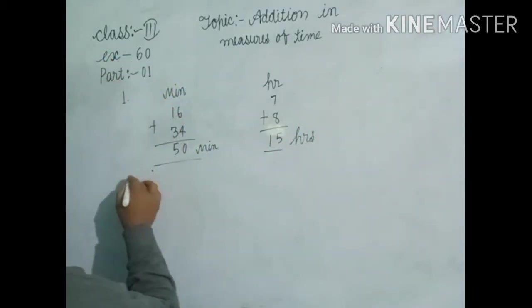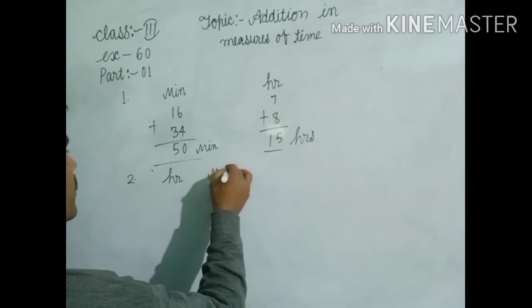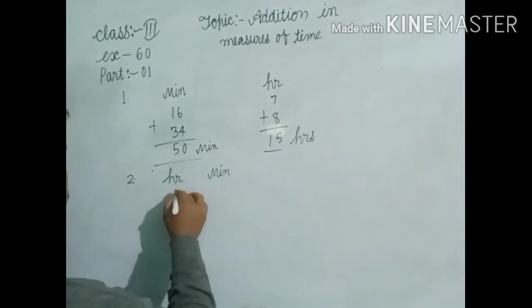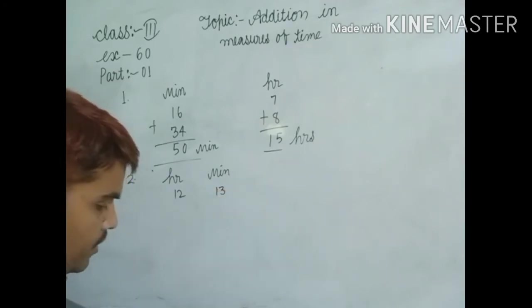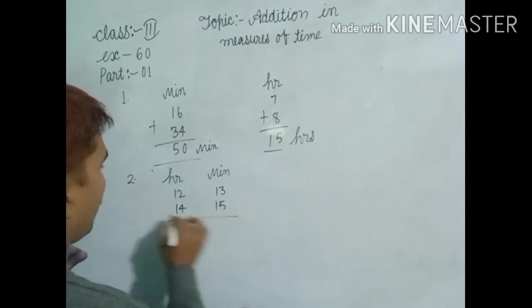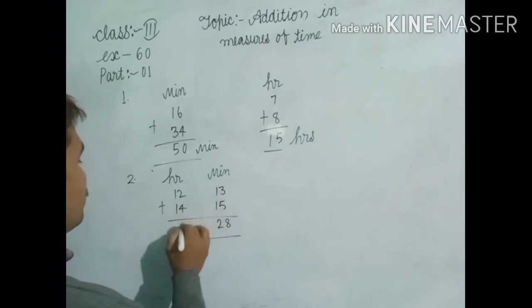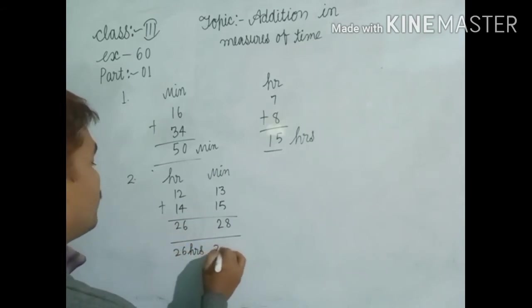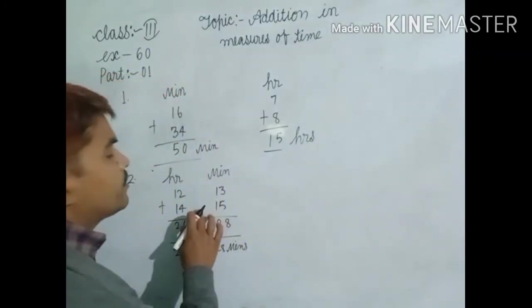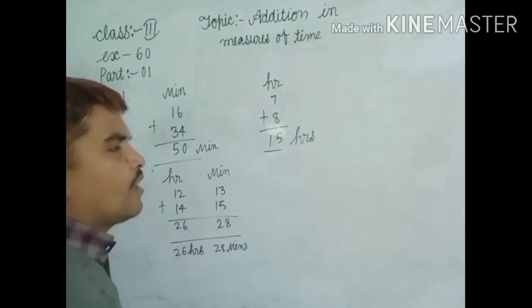Now, second question. Here hour and here minute. Write down 12 hours, 13 minutes, and 14 hours, 15 minutes. Now add them. This is ordinary addition. 5, 3, 8, 1, 1, 2, 4, 2, 6, 1, 1, 2. That means 26 hours and 28 minutes. No problems? Dear students, in this way you make minute, hour, hour-minute additions.